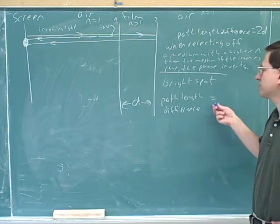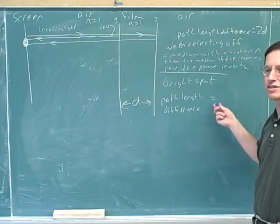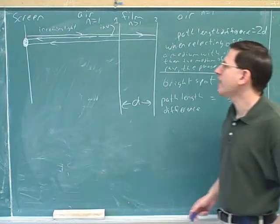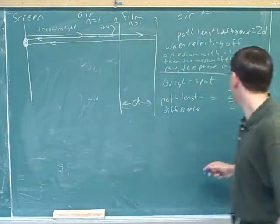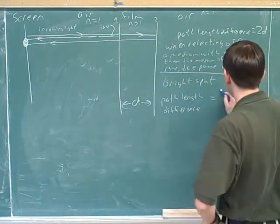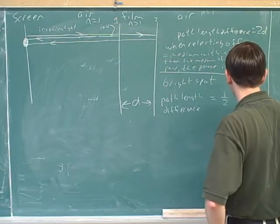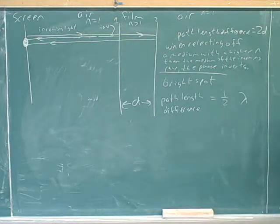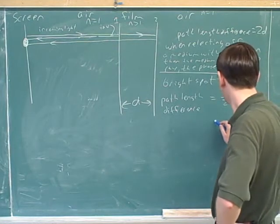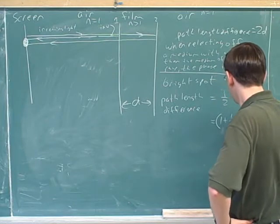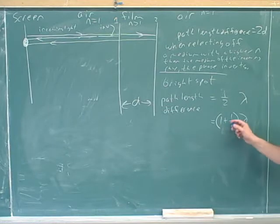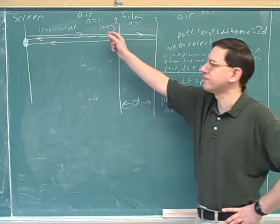So how big of a path length difference do we want to get them back into phase? Half a wavelength. If they're already half a cycle out of phase, and then one goes half a cycle further than the other, that would bring them back into phase. So in this case, we need a path length difference of half a wavelength. Or one and a half wavelengths — if there was a path length difference of one and a half wavelengths, there would still be a half wavelength difference, which would cancel out the inversion.